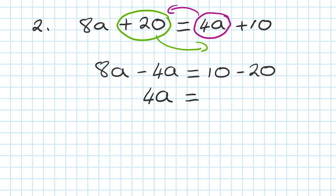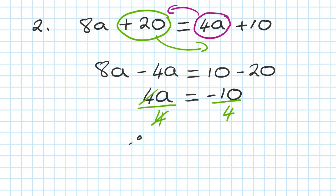8a minus 4a is left with 4a. And 10 minus 20 is minus 10. Otherwise, just use your calculator if you're not 100% sure. So what I do — I get rid of 4, because I want to find a by itself. So I get rid of 4; if I divide by 4 on the left, I must divide by 4 on the right. Whatever we do on the left, you need to do the same thing on the right.